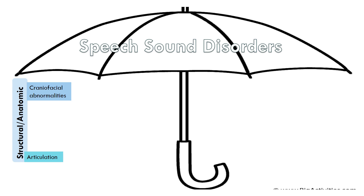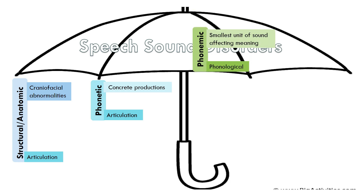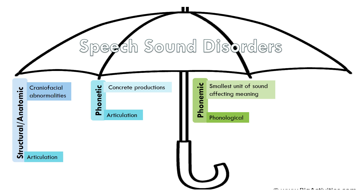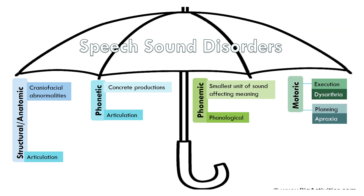When we talk about speech sound disorders, we have the structural or anatomic — articulation disorders — the phonetic or concrete productions, which also fall under articulation disorders, and our phonemic or phonological disorders affecting the smallest unit of sound. Previously we covered motoric disorders: dysarthria and apraxia. Motor speech disorders are generally caused by damage to the brain or nerves — the CNS and PNS. Articulation and phonological disorders are more often developmental in children with no known cause, meaning idiopathic.